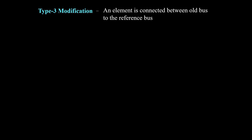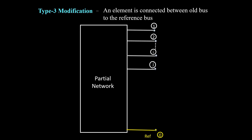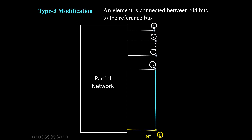Here we are not going to bring any new bus to the system. We are going to connect an element between the existing buses of the partial network. Let us consider the partial network with buses 1 to N. The I and J buses are called old buses — buses which already exist in the network. If we connect a branch between an old bus and the reference bus, J bus is the old bus and 0 is the reference bus. The impedance of the newly added branch is ZB.